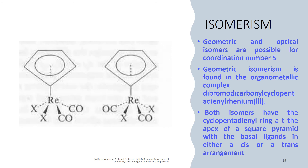Geometric and optical isomers are possible for coordination number 5. Geometric isomerism is found in the organometallic complex dibromo-dicarbonyl-cyclopentadienyl-rhenium(3+). Both cis and trans isomers have the cyclopentadienyl ring at the apex of the square pyramid, with the basal ligands being halogen and carbonyl ligands arranged either in cis or trans fashion.